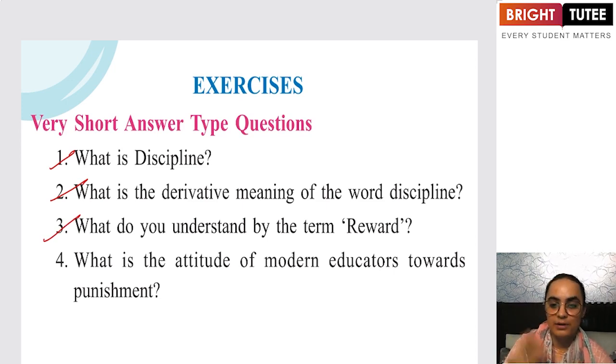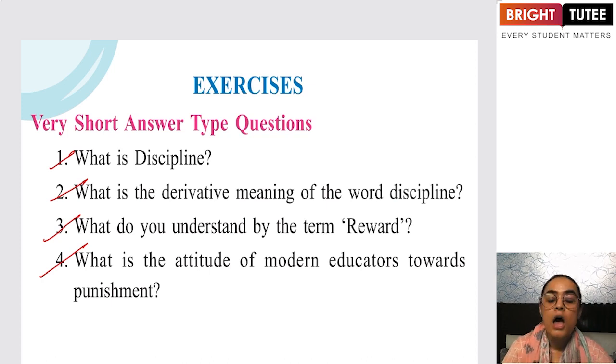What is the attitude of modern educators towards punishment? Modern educators believe that punishment is not important for discipline at all. Rather, they believe in the concept of reforming the students rather than punishing them.